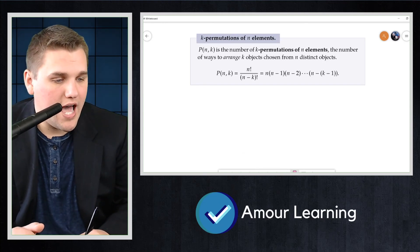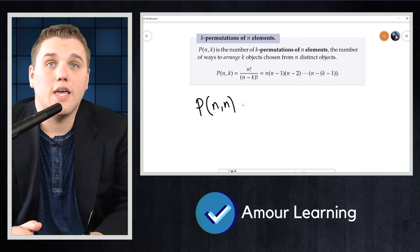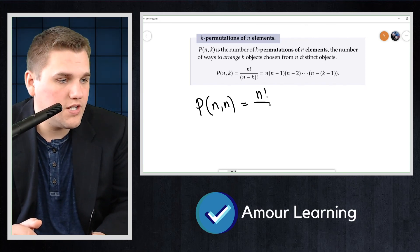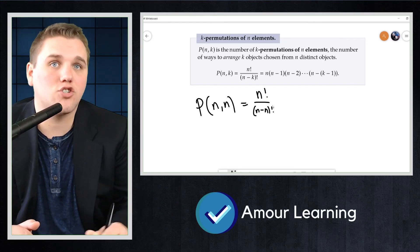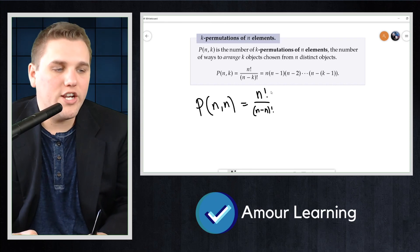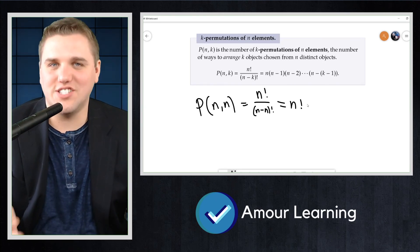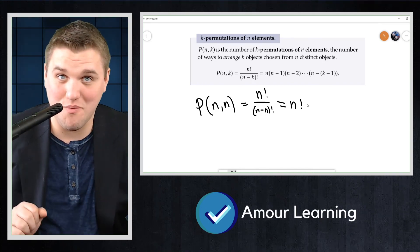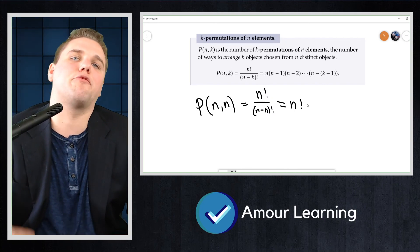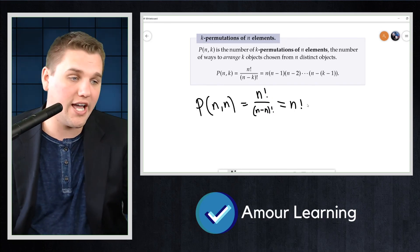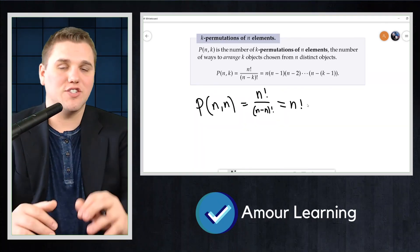So this means that P(N,N) equals N factorial divided by (N minus N) factorial, which equals N factorial, since we defined zero factorial to be one. Now, this makes sense. We already know N factorial gives the number of permutations of all N objects. So this formula, in fact, works for values of N and K.